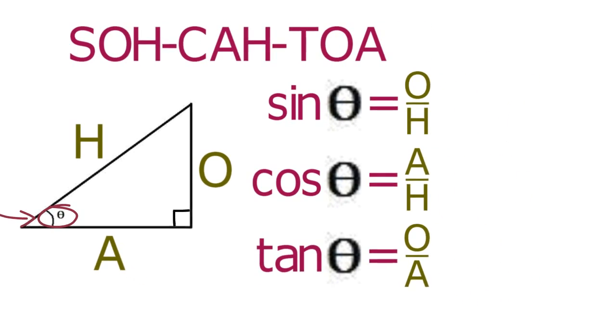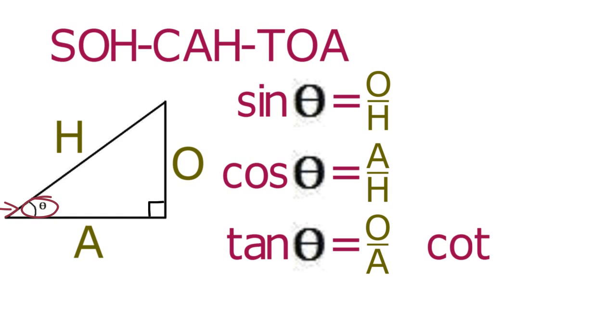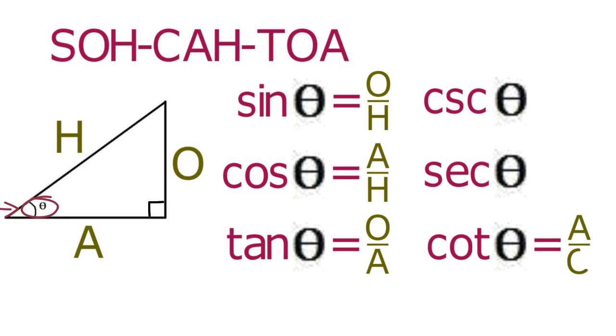Each of these basic trig functions has a corresponding reciprocal function. The cotangent of theta equals A over O, which is the reciprocal of the tangent of theta. The secant of theta equals H over A, which is the reciprocal of the cosine of theta.